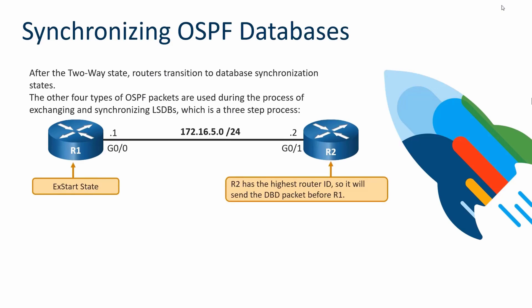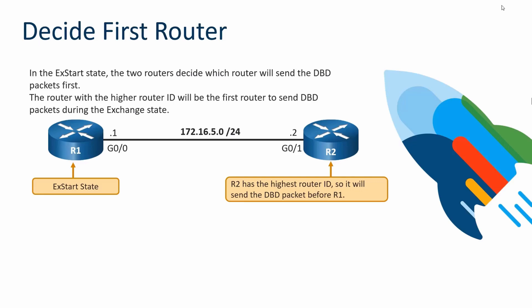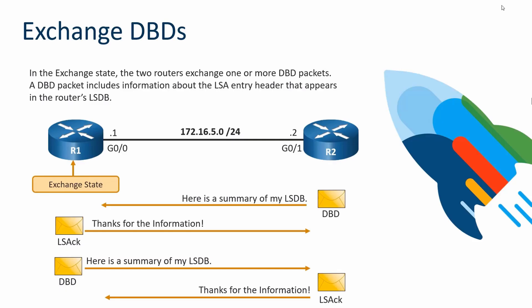Routers then move on from the Two-Way state to the synchronization process for their OSPF database, specifically synchronizing their link state databases — their topology tables. The ExStart state begins this process, where routers determine who will share their link state database first. The database is shared as a DBD (Database Description) packet, a summarized form of the link state database. The router with the highest ID sends its DBD first; R1 acknowledges receipt, then sends its own summary, which R2 acknowledges.